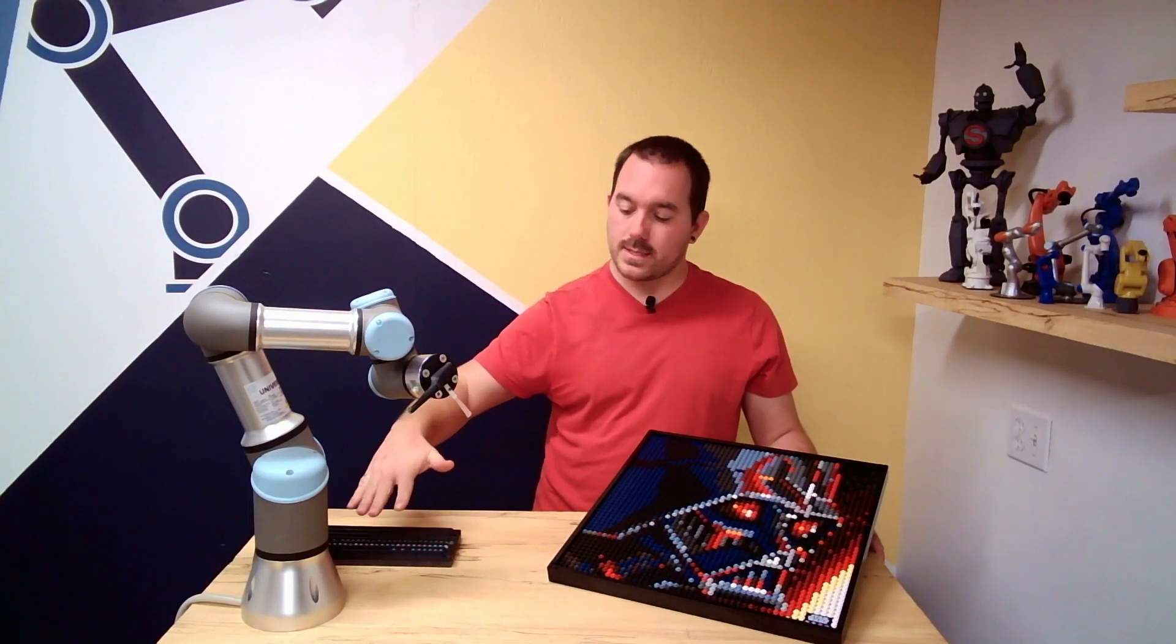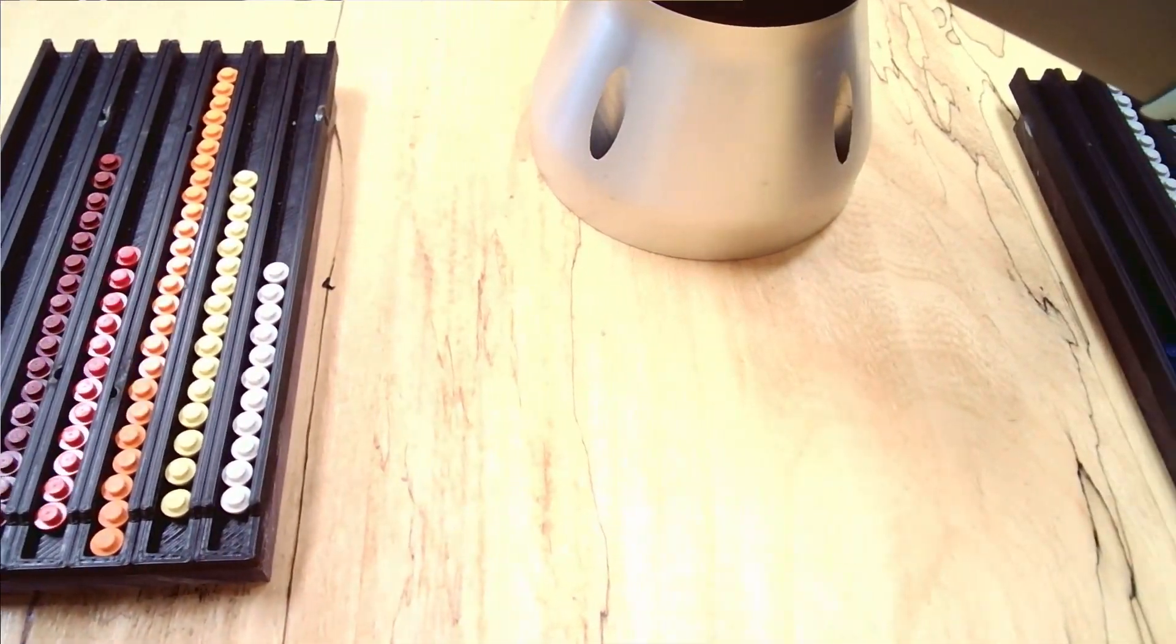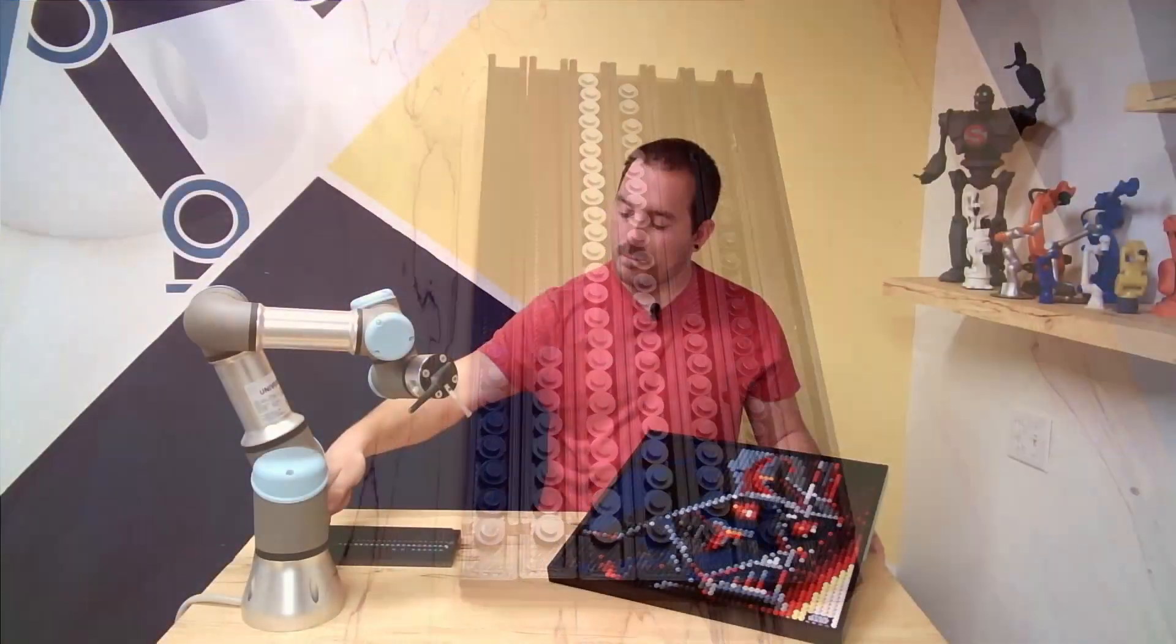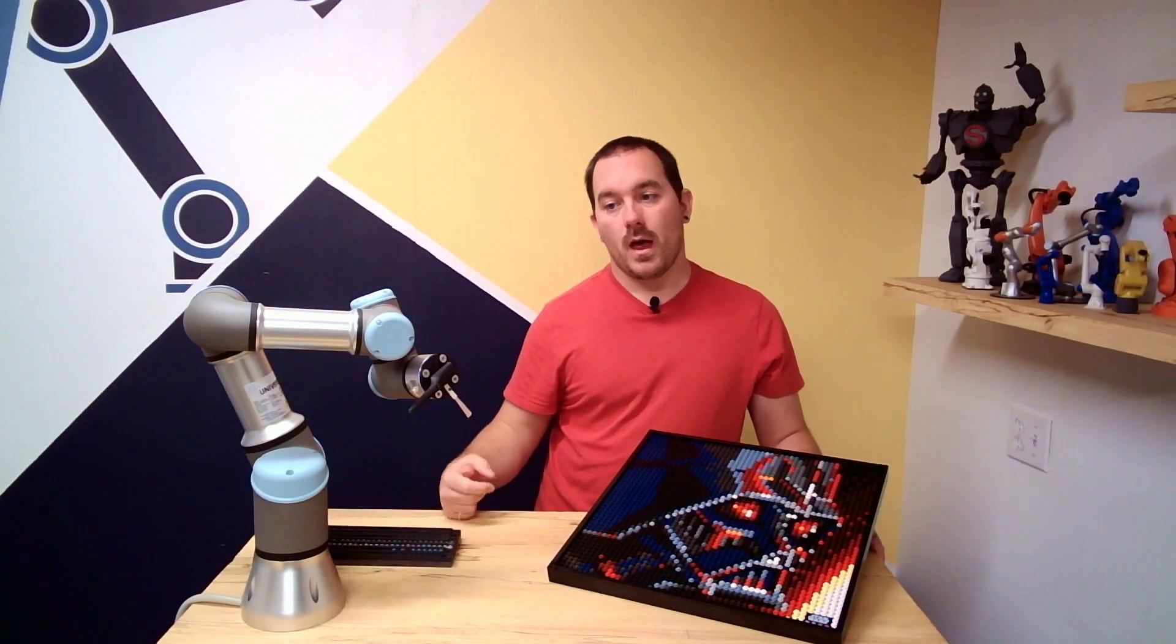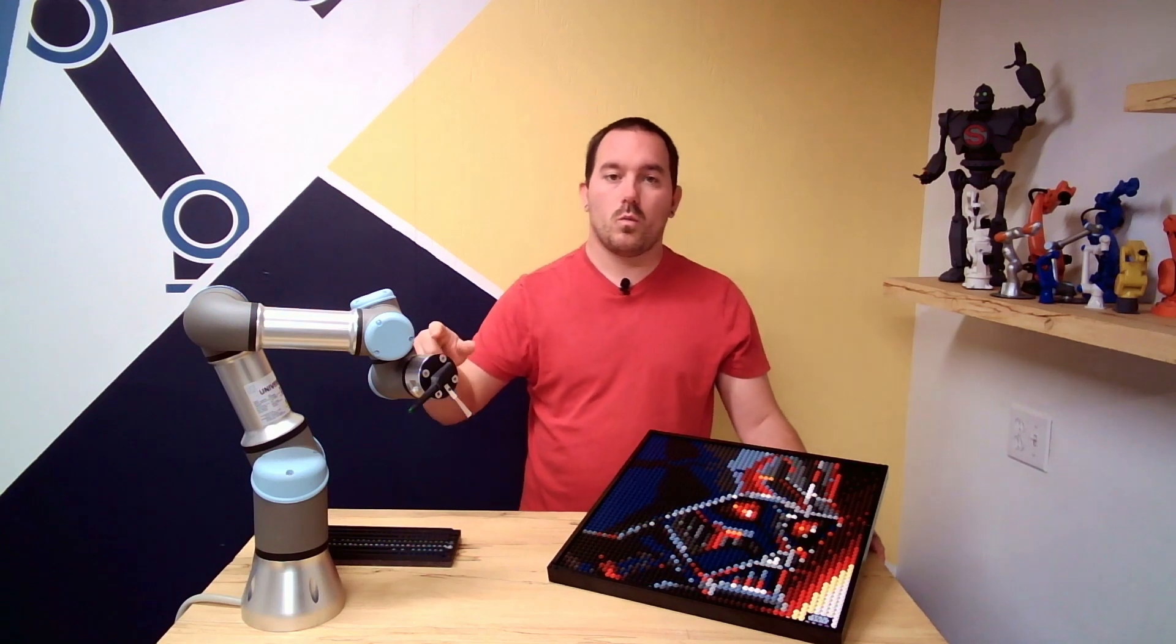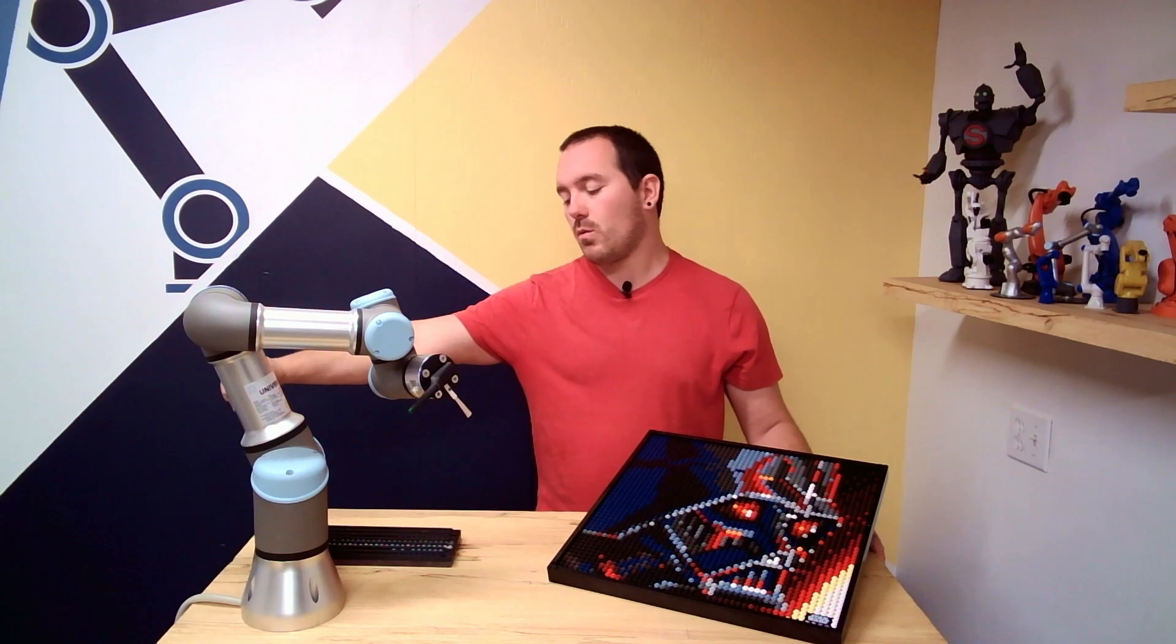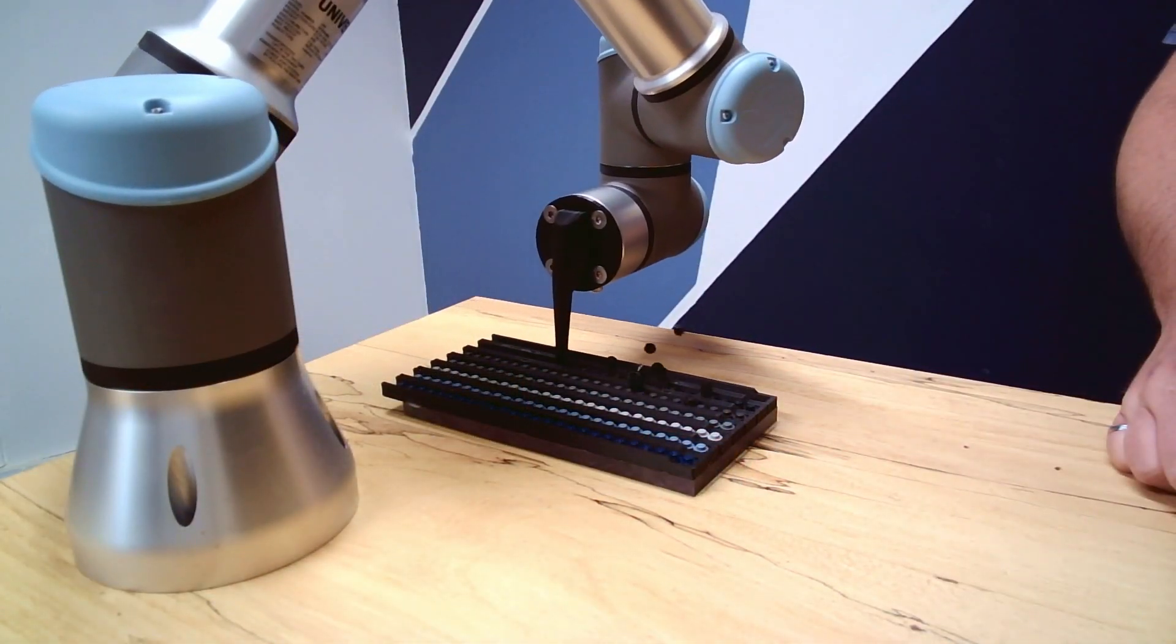So I ended up taking those slots and splitting them into kind of two banks and was hoping that I could use the end of the arm and the force measurement to come in and brush all the pips to the end before I picked up the last one. And that worked okay, but the force feedback in the CB3 arms isn't accurate enough for that kind of real detail work. So there were cases where it would basically plow through and just sort of splash pieces everywhere. So that didn't work.